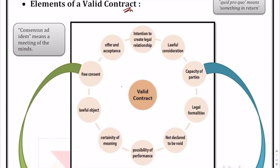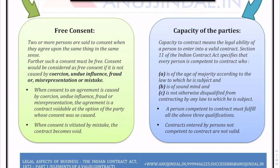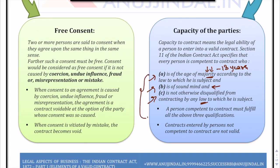Valid contract elements include capacity of parties. Not everyone is eligible to contract — for example, a 5-year-old child cannot. Eligibility criteria: the person must be a major (18 years in India), of sound mind, able to understand terms and conditions and make a rational decision, and must not be disqualified by law — for example, a criminal may be disqualified by law from entering any contract.